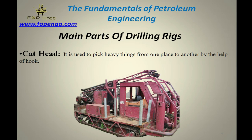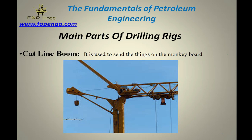Cat head — cat head is basically used to pick heavy things from one place to another, to transfer things to the floor. It is mainly on the rig floor. Cat line boom — cat line boom, which we can also call a hoisting line, is used to send things to the monkey board. These are the lines basically used to send things to the monkey board.